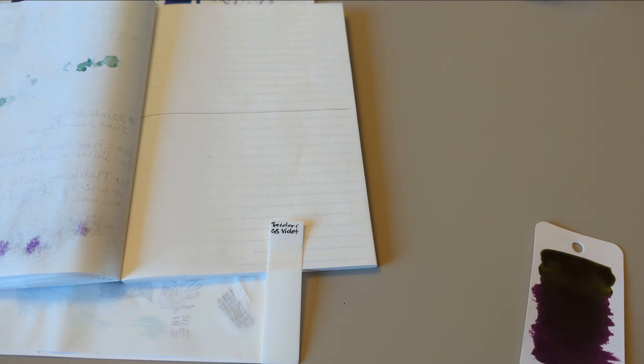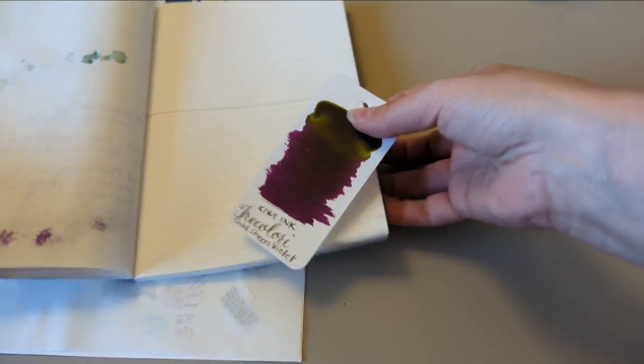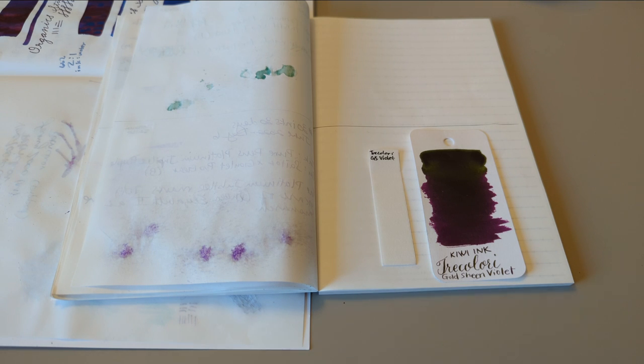Okay, that's really funny because it's like so similar to the color I'm using now. So that says Tricolori, Gold Sheen Violet. Like, what are the chances? I mean, I could tell you. They were 1 in 30 minus 6. So, 1 in 24.